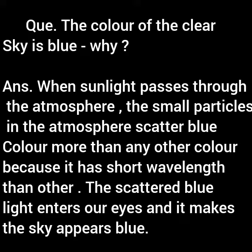You can also write the answer like this: The molecules of air and other fine particles in the atmosphere have a smaller size than the wavelength of visible light. When sunlight passes through the atmosphere, these molecules and fine particles scatter blue light of shorter wavelength more strongly than other colors. When this scattered blue light reaches our eyes, it makes the sky appear blue, and that is why the color of the clear sky is blue.